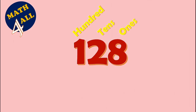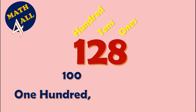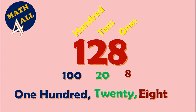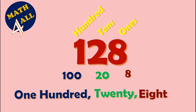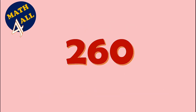The value of one in the hundreds place is 100. The value of two in the tens place is 20. And the value of eight in the ones place is just eight. So the number is 128. Excellent! Now let's see the next example.